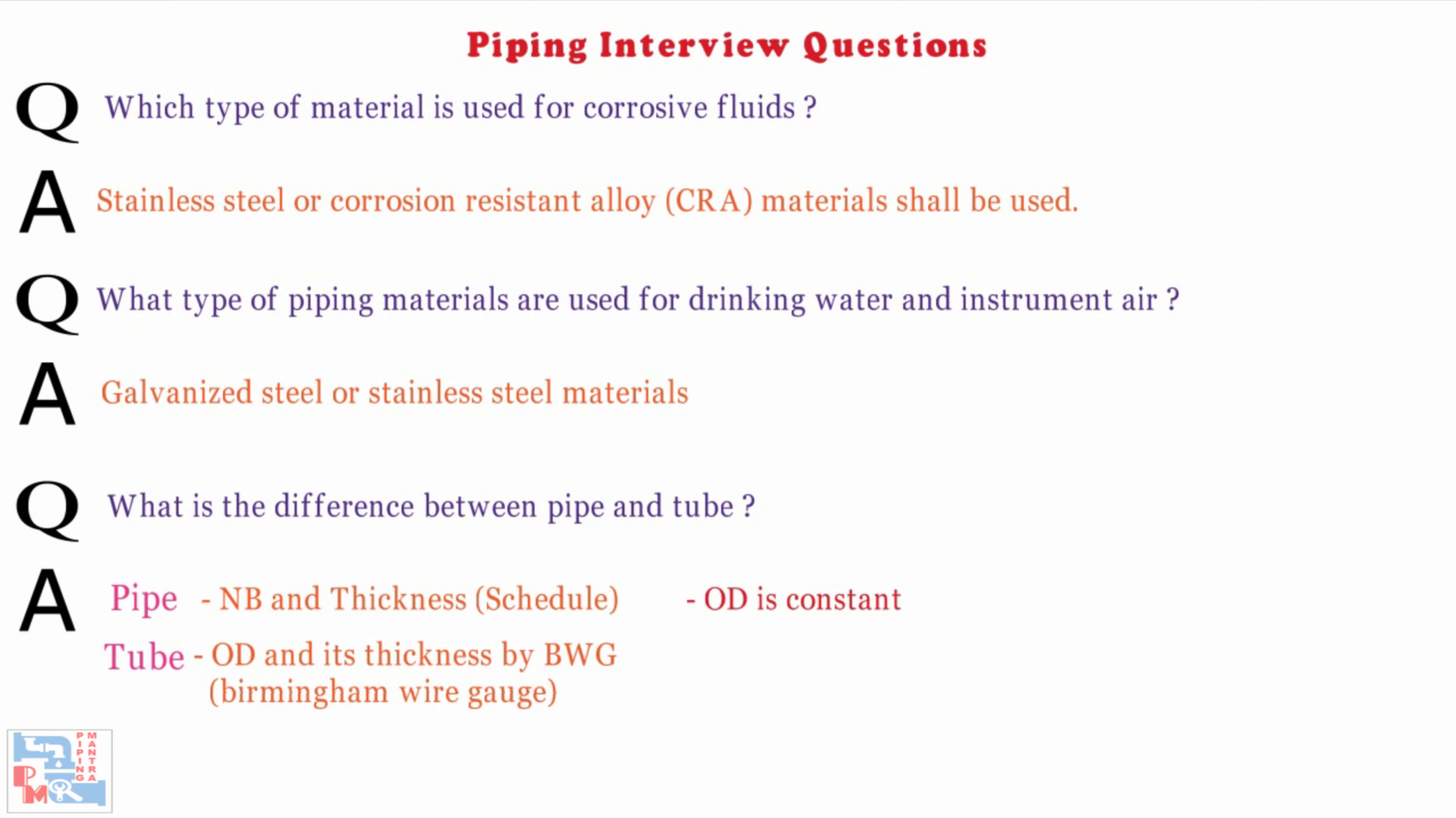In pipe, outside diameter OD is constant, whereas in tube inside diameter ID is constant.